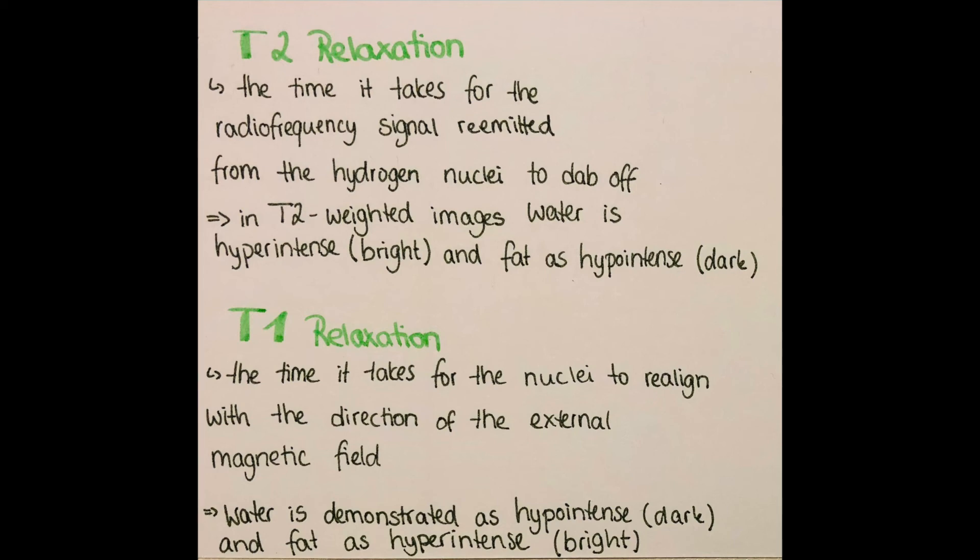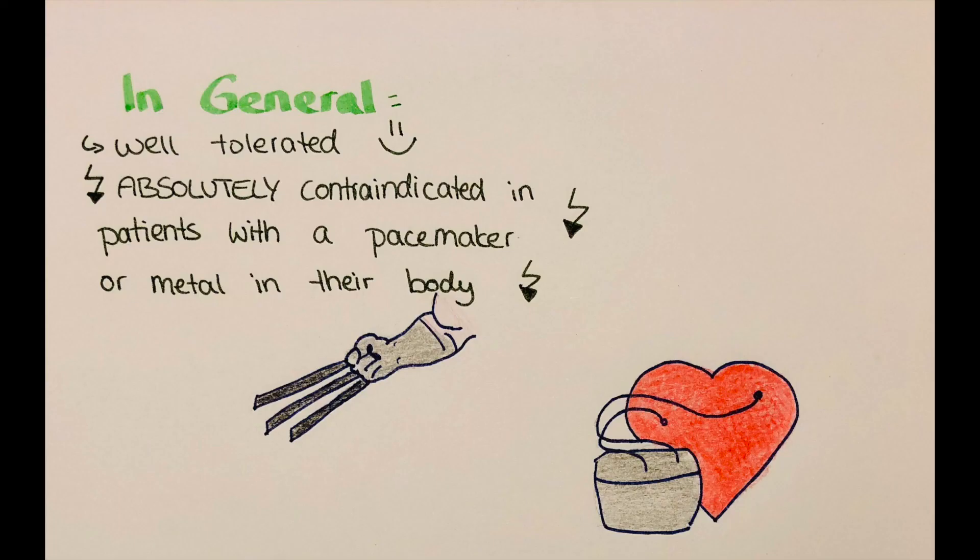In general, MRIs are well-tolerated by most patients, but it's absolutely contraindicated in patients with metal and magnetic reactive parts in their body, like for example a pacemaker. This could lead to potentially fatal outcomes.